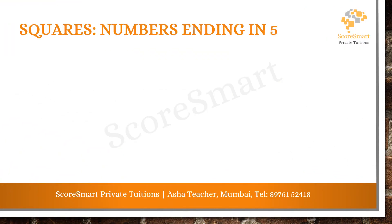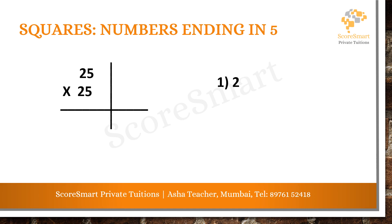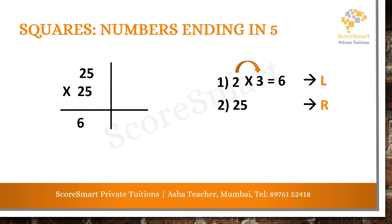Let's see one more example: 25 into 25. First step: 2 multiplied by the next number 3 gives 6 — this is the left side answer. Second step: just write 25 on the right side. Mix them together and the answer is 625. So 25 into 25 equals 625.